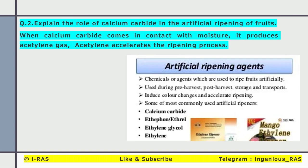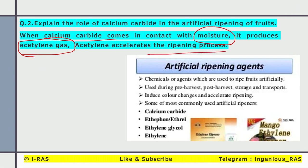Second question: explain the role of calcium carbide in the artificial ripening of fruits. There are certain hormones which accelerate the ripening process of fruit. Calcium carbide comes in contact with moisture and it creates acetylene gas, which accelerates the process of ripening in fruits. Other artificial ripening agents include ethylene, and calcium carbide among others.